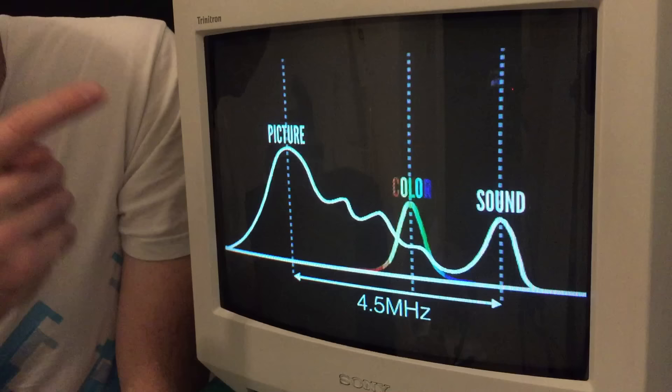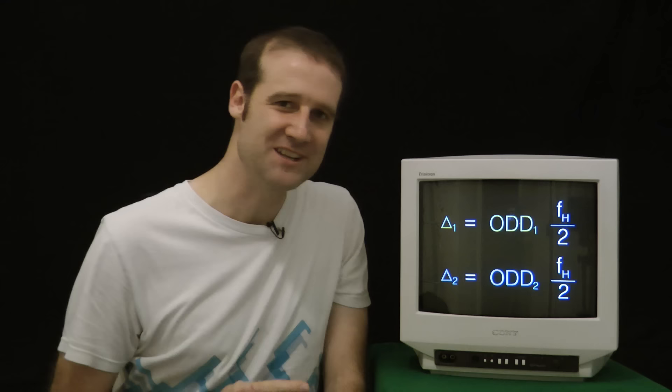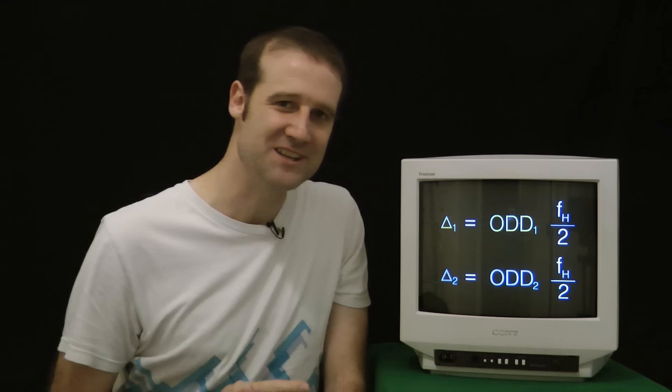So the technicians had to find a way to fix that. And thankfully, there's a thing called line-by-line phase reversal. And even though I don't fully understand how that works, I do know what the criteria are to be able to use it. And it comes down to the two gaps. The gap between the picture frequency and the color frequency, and the difference between color and sound. In order for line-by-line phase reversal to hide the artifacts, both of these distances had to be an odd integer multiple of the horizontal frequency divided by two.